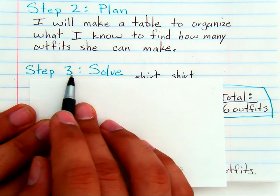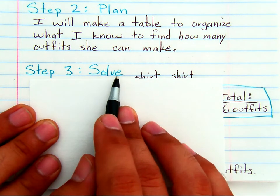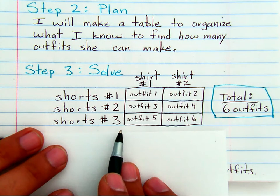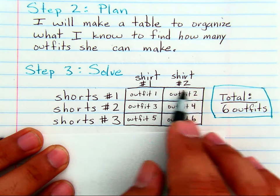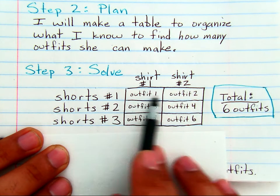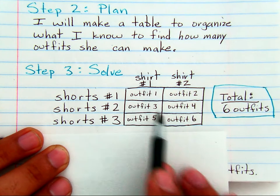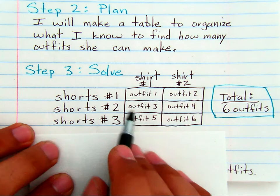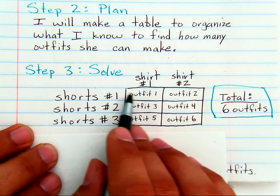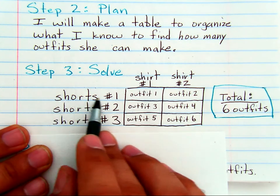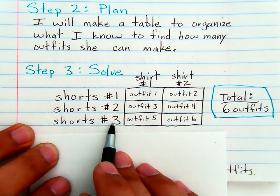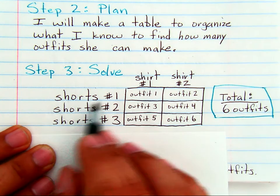Step three is solving the problem using our plan. Again, the table is going to look very much like an array. Notice how it has rows and columns. Now each row is going to be defined as a pair of shorts: either one, two, or three, because Sara bought three pairs of shorts.